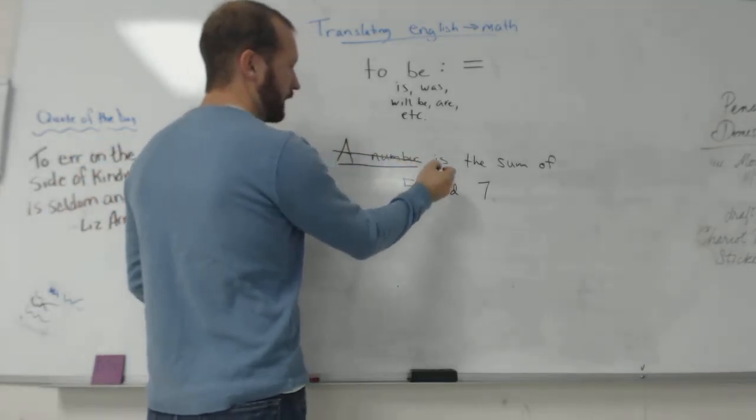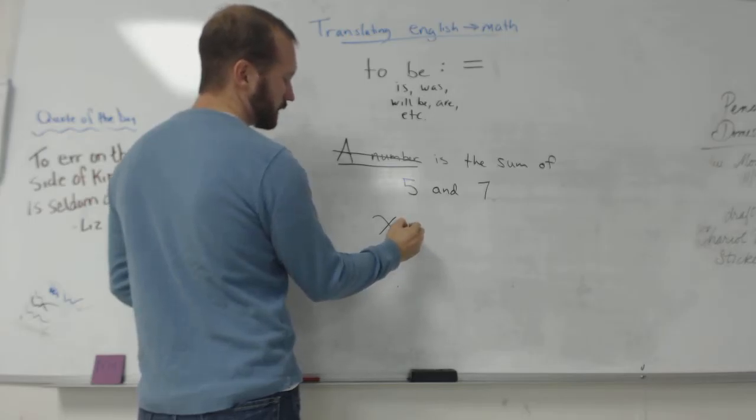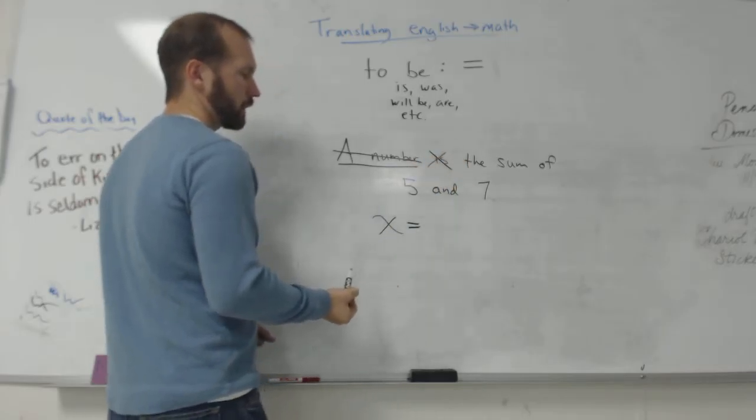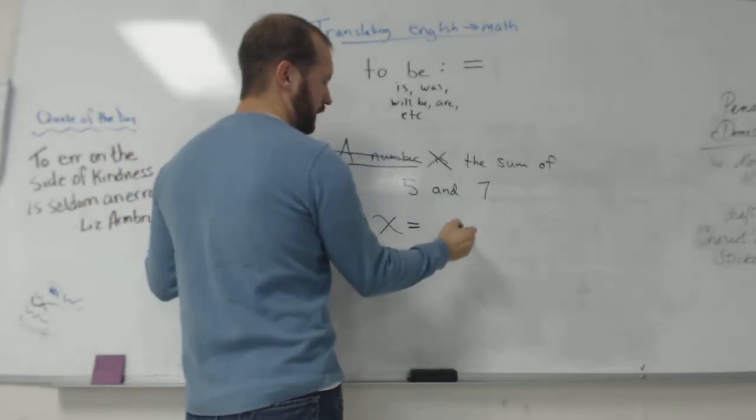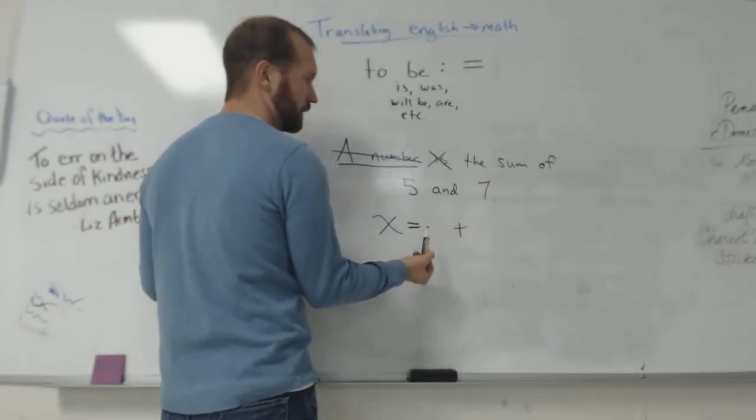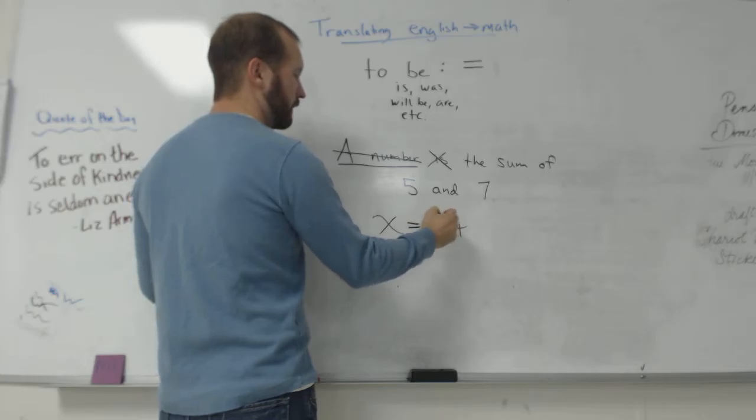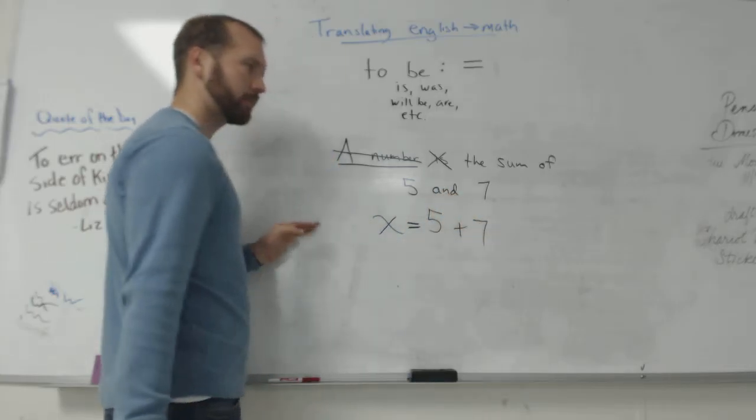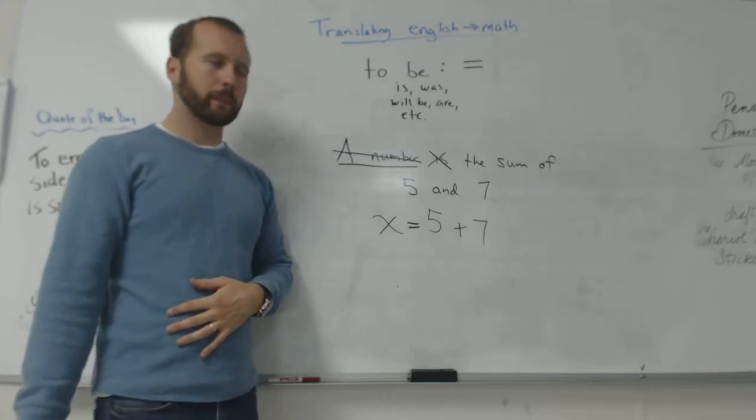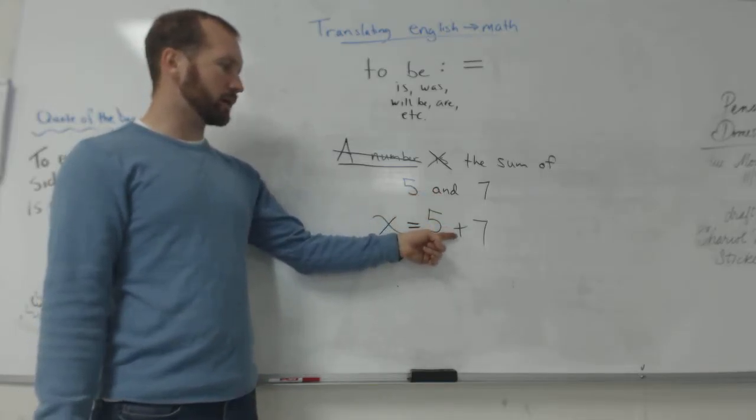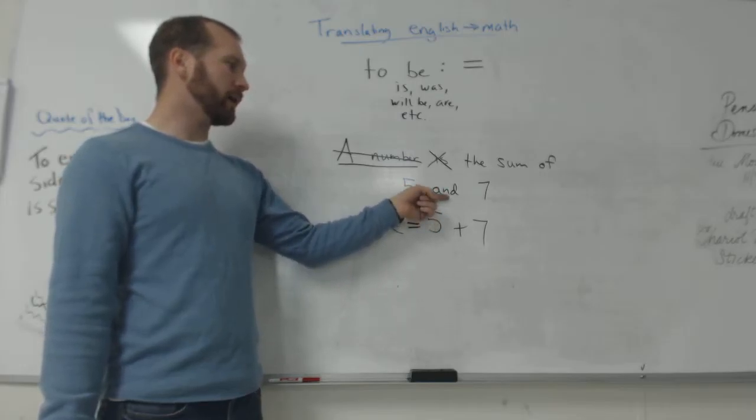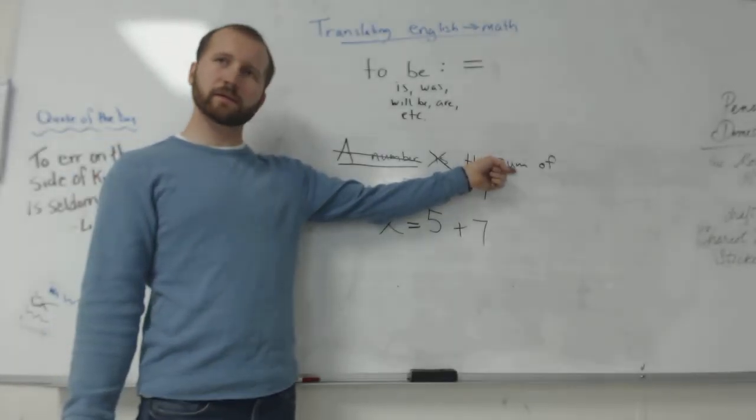X. So I've done that. Is. How do I write is? Equals. The sum, so I know I'm adding two things together, five and seven.